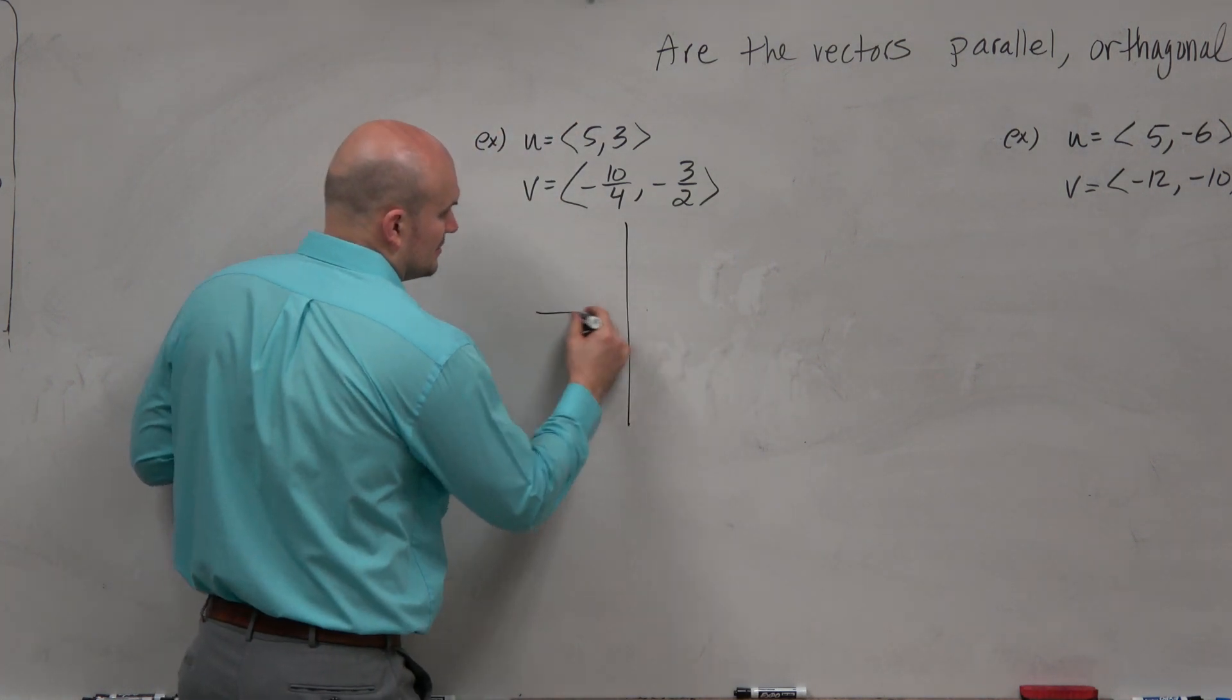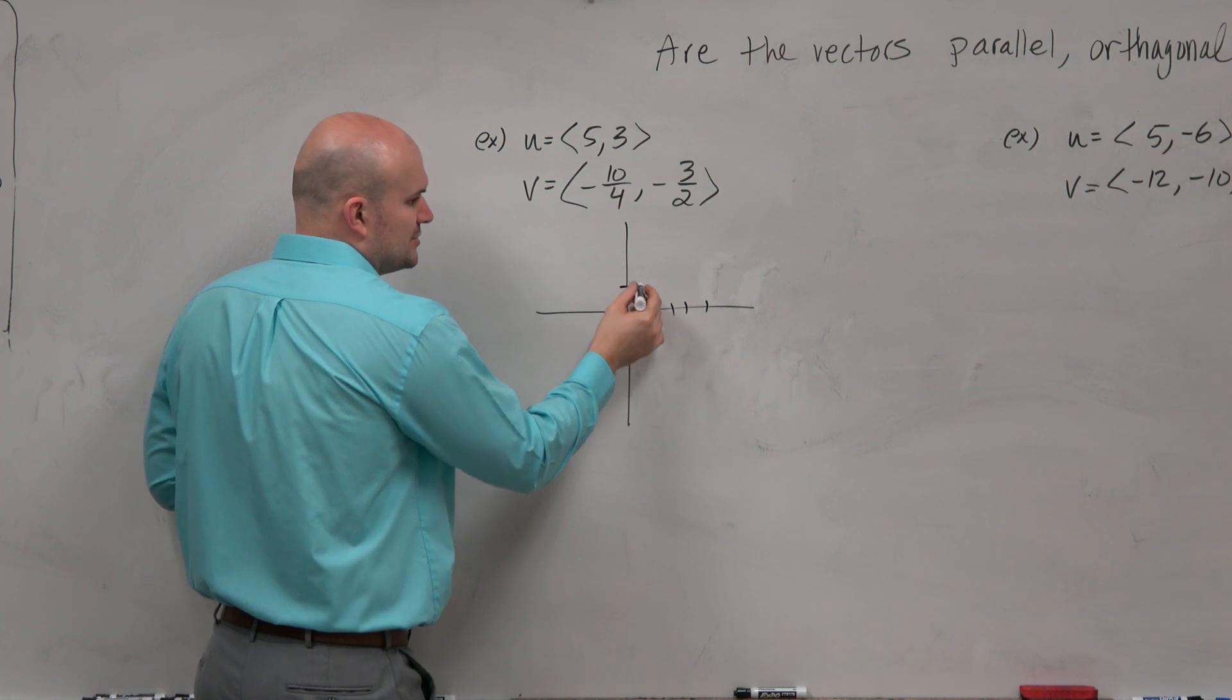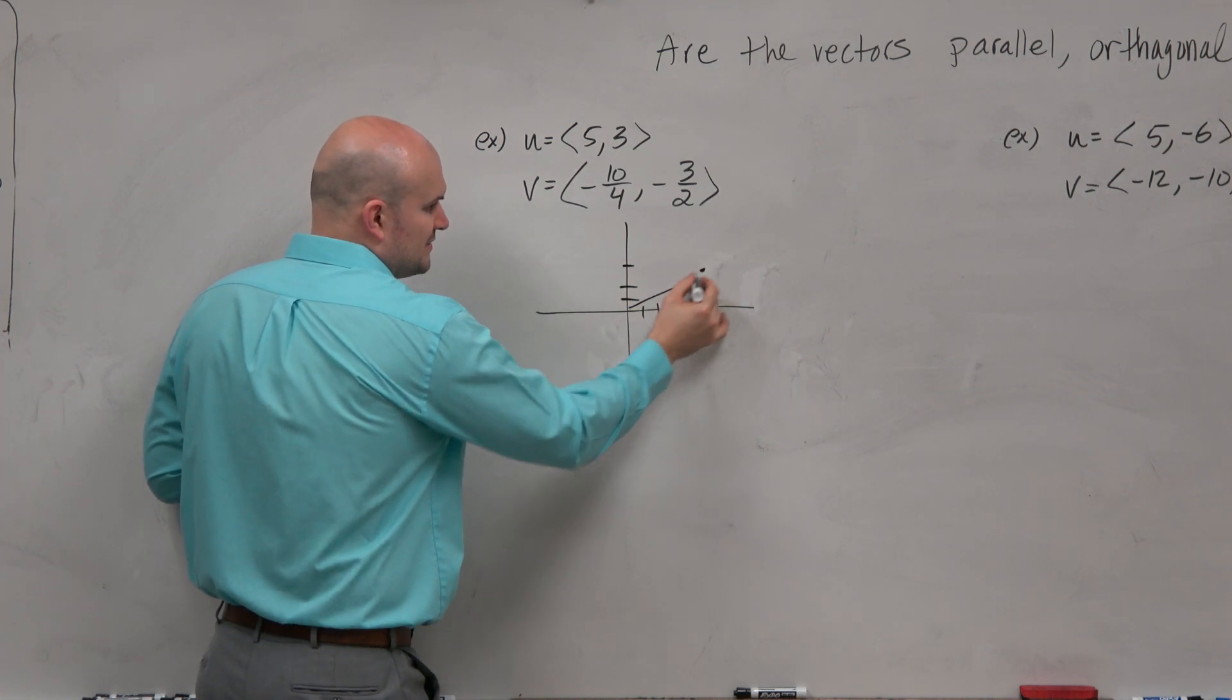Like if you were to graph these, or just graph 5 thirds. 1, 2, 3, 4, 5. 1, 2, 3. There's the vector 5 thirds.